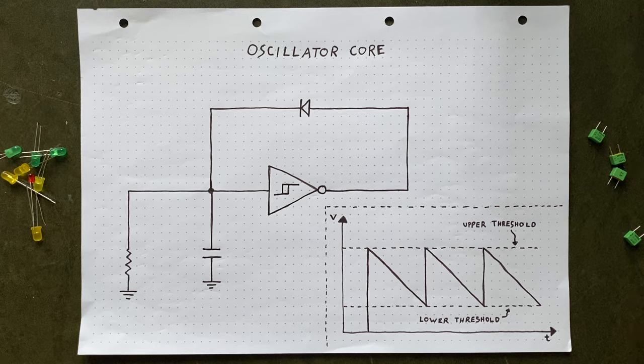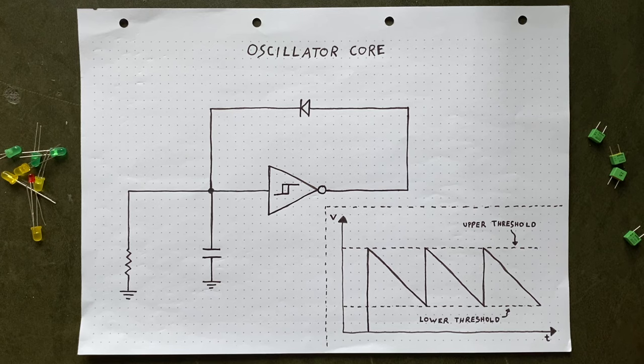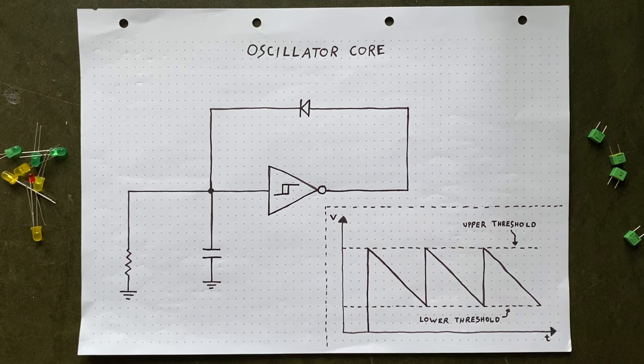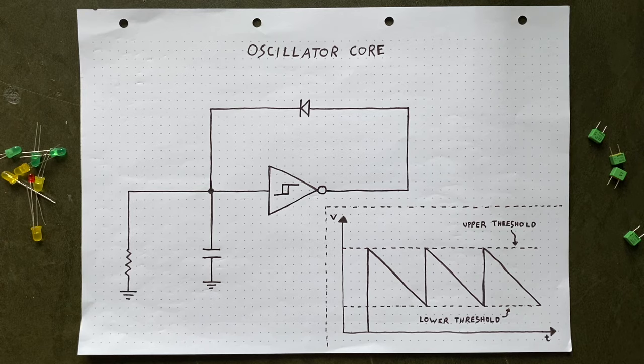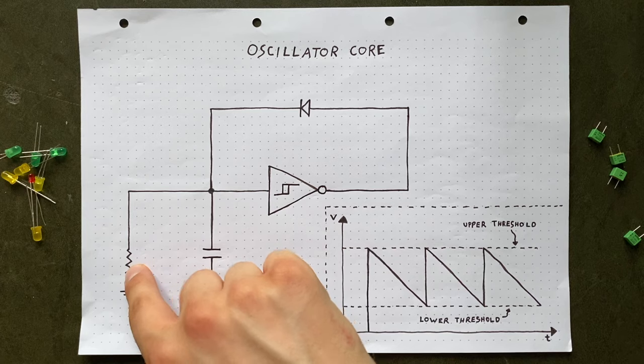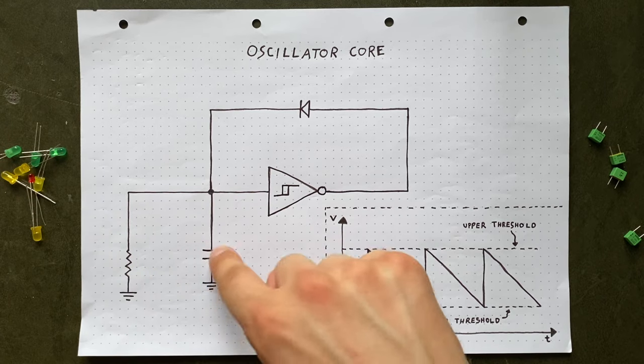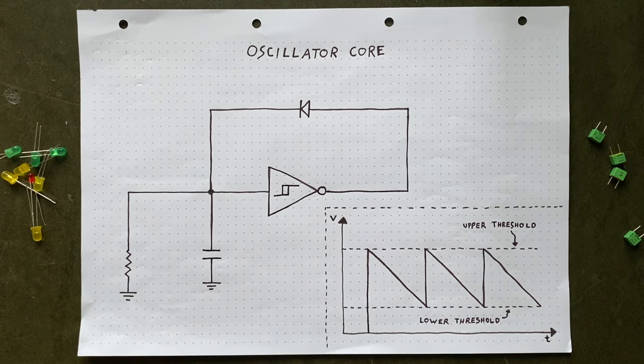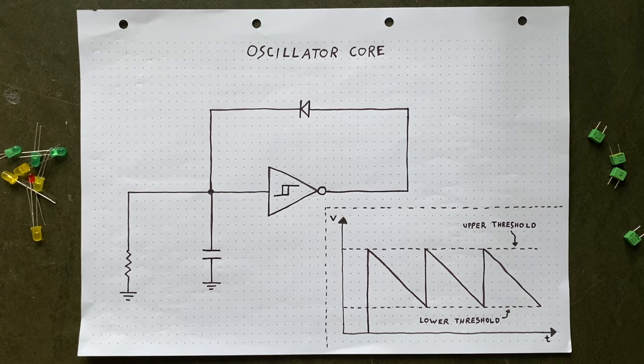Remember when I said that a sawtooth wave's pitch is easy to manipulate? Because it's all dependent on the wave's second phase. That's going to come in handy now, since that second phase is really just this capacitor discharging through this resistor. If it's discharging fast, the pitch is high. If it's discharging slow, the pitch is low.